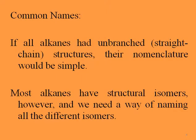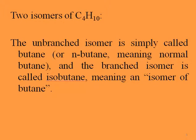If all alkanes had unbranched, straight-chain structures, their nomenclature would be simple. However, most alkanes have structural isomers, and we need a way of naming all the different isomers. For example, butane, C4H10, has two isomers: the unbranched isomer is simply called butane or n-butane, meaning normal butane, and the branched isomer is called isobutane, meaning that isomer of butane.